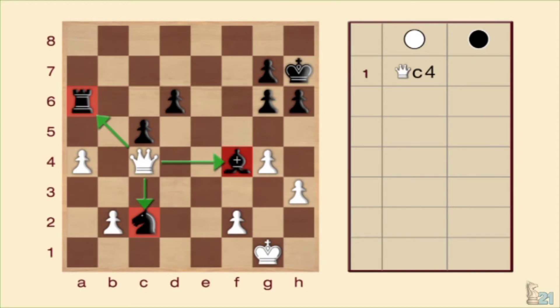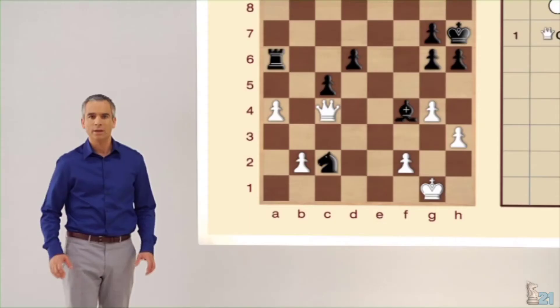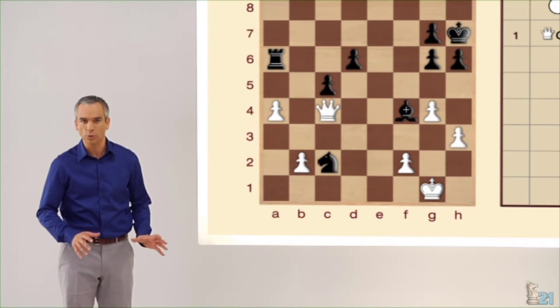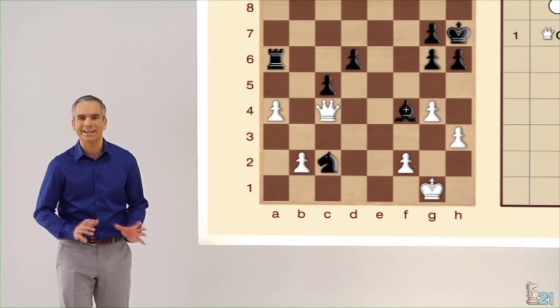Debéis saber que los ataques triples raramente tienen defensa posible. En este caso, las negras solo pueden defender dos de las piezas. En esta posición, hemos visto un ejemplo de defensa directa, uno de defensa indirecta y otro de ataque triple.